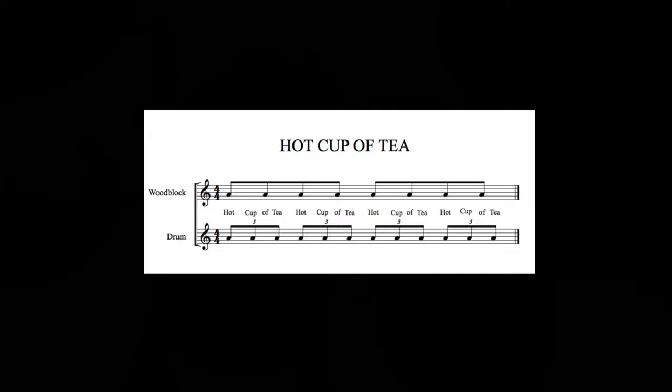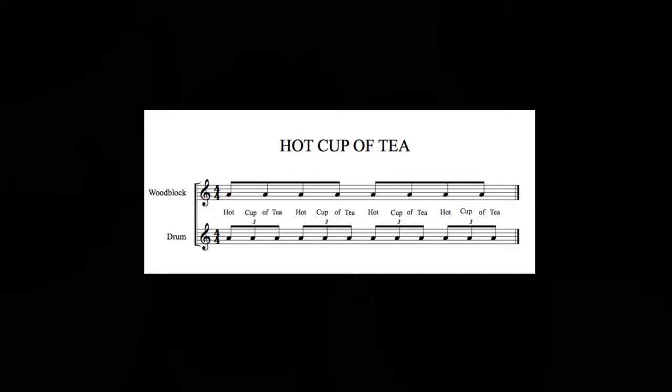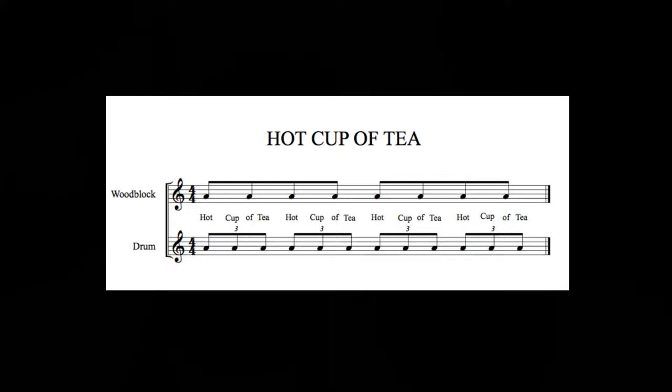Music theory moment: polyrhythms are when multiple pulse patterns of different meter — essentially the way beats are divided up in a piece — are played simultaneously to create a brilliant, complex mass of rhythm.